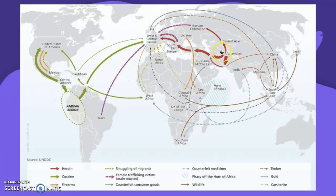Heroin largely comes from Afghanistan; cocaine largely from South America, going to Europe and the US. Firearms — I'm not sure about the regulations for those. Smuggling of migrants is a lot from Central Africa to Europe. Female trafficking victims come a lot from Eastern Europe — UK, Ukraine, Russia — and also South America and Brazil.